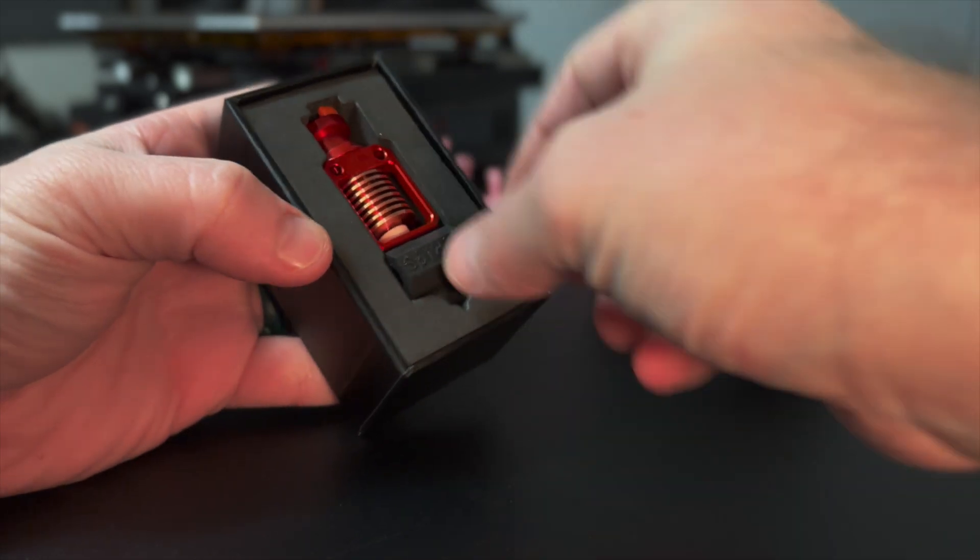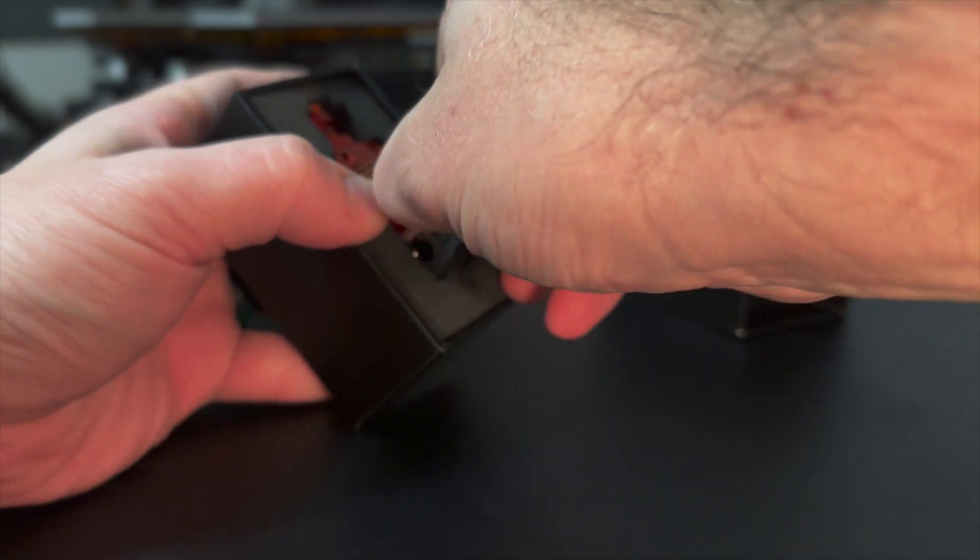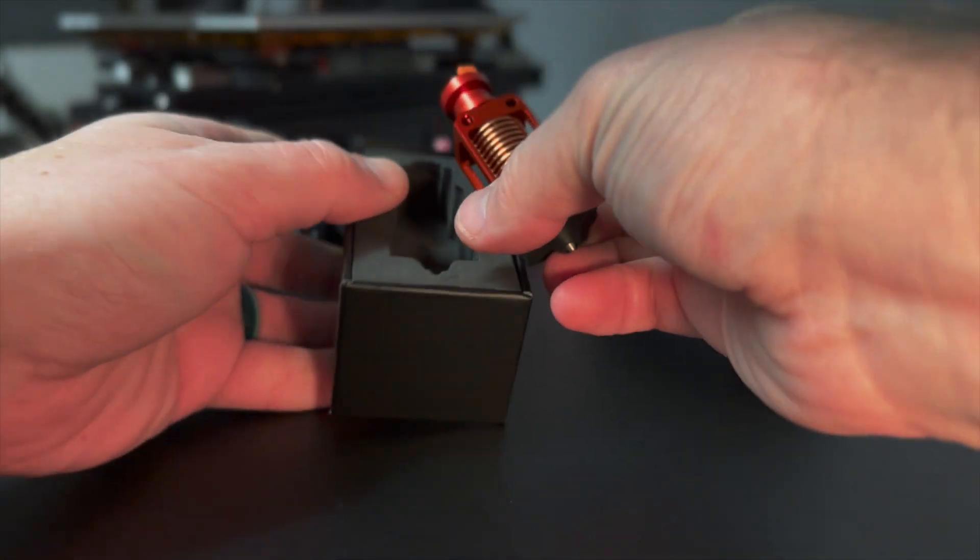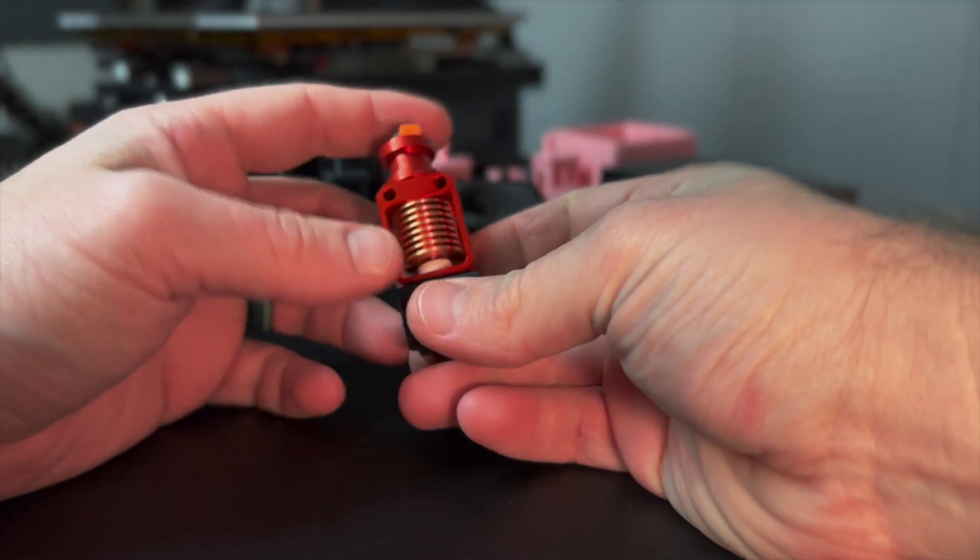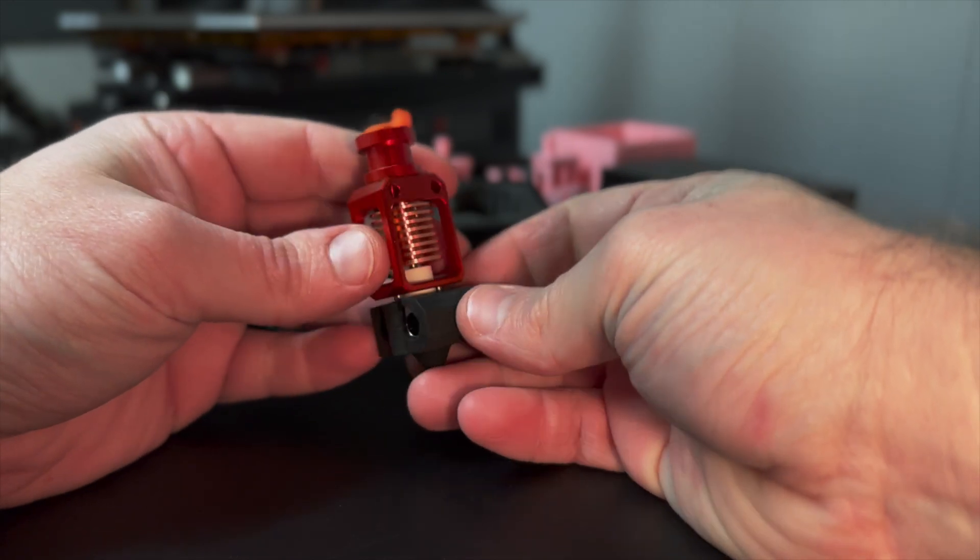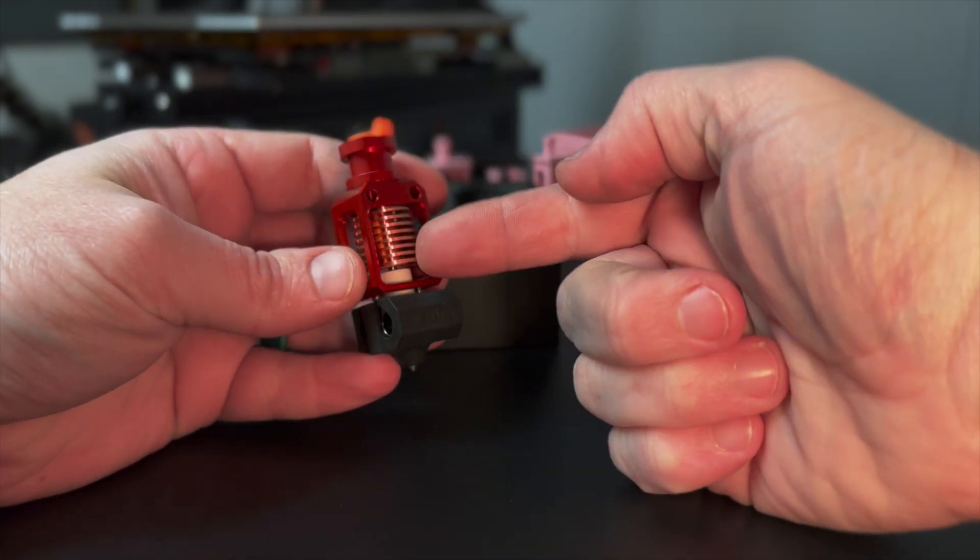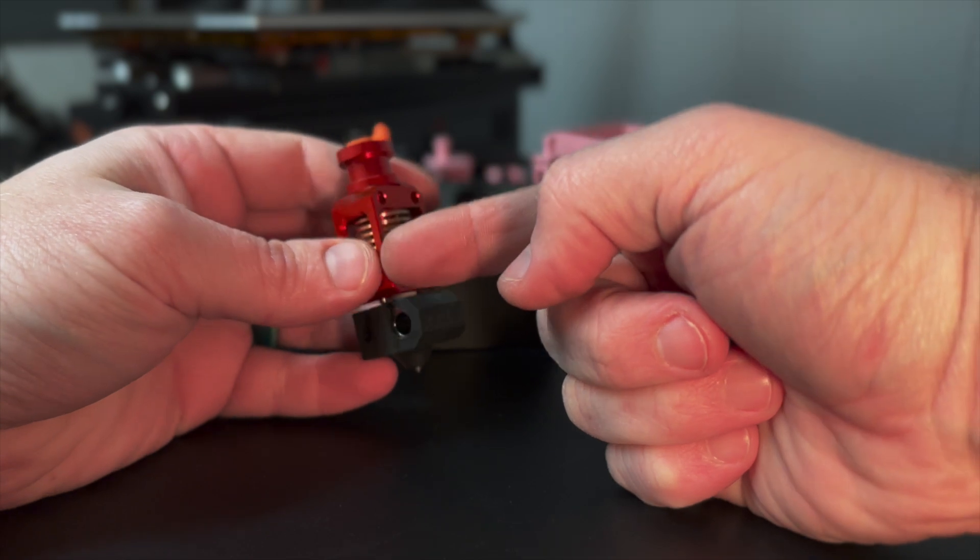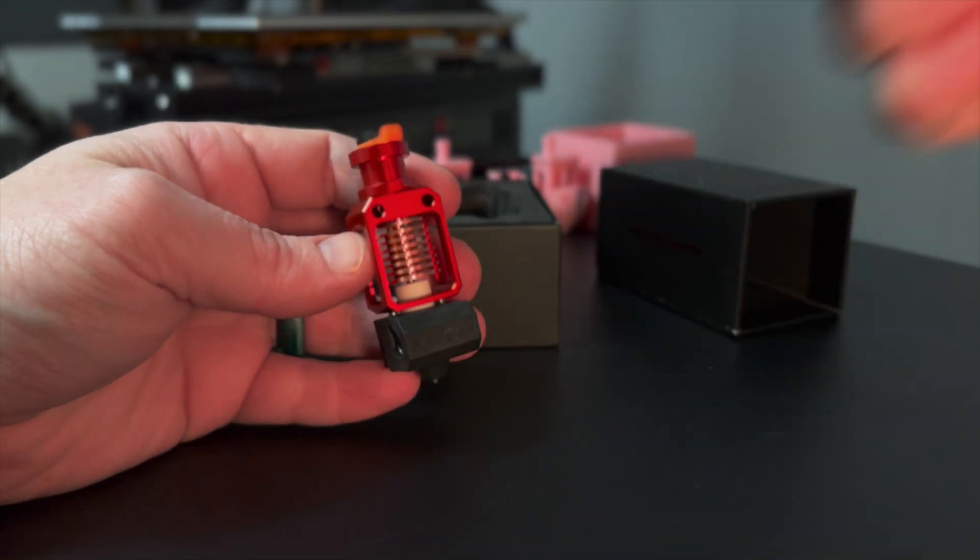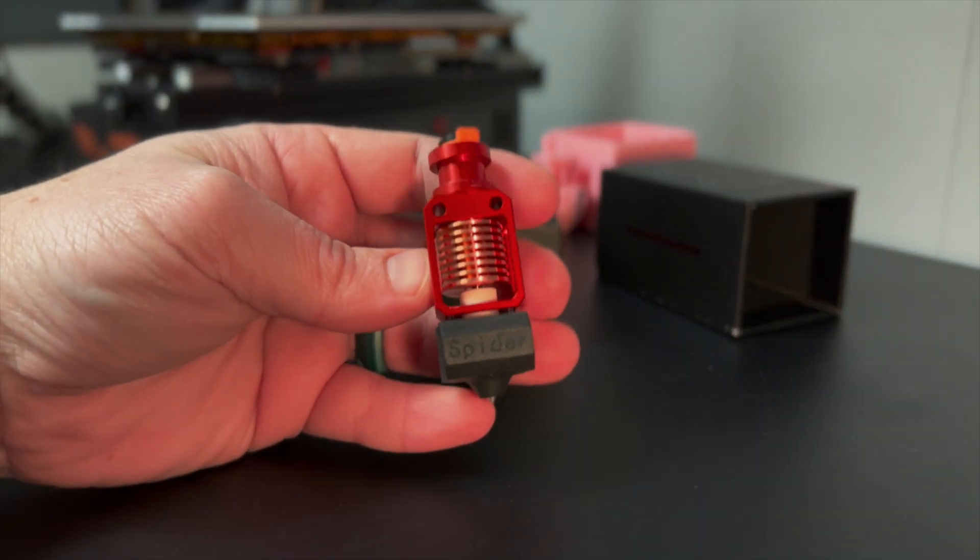All right, so here's how it comes. Has a lovely red color. I actually think it's nice that they kept it red, because the original Creality hotends were red and they're kind of iconic in that sense. But as you can see it has this open structure, nice CNC machining. It feels very, very high quality just in the hand. The materials feel really nice.